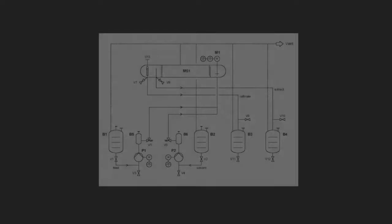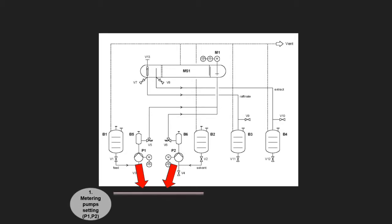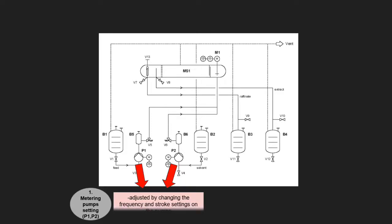The following procedures will serve as a quick reference for operating the unit. This is the process flow diagram for the single-stage mixer-settler, showing metering pump settings P1 and P2. The feed flow rate can be adjusted by changing the stroke and frequency settings on the pump. Adjust the stroke length by turning the knob on the pump and set the frequency on the pump's control panel. By referring to the pump's flow rate settings diagram in the appendix, we can determine the required stroke and frequency values to achieve a specific flow rate.